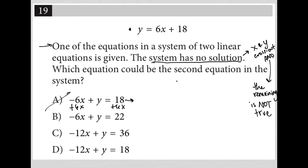Okay, so how about choice B? Well, choice B, if I added 6x to both sides, would be y equals 6x plus 22. I like this one.